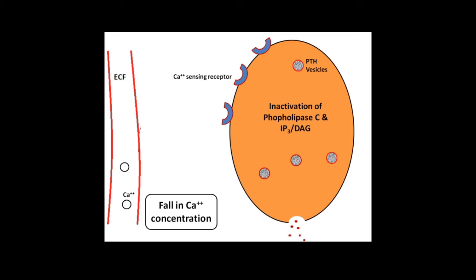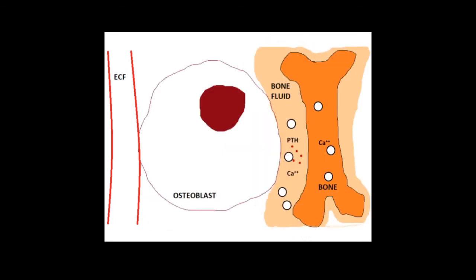This parathyroid hormone then reaches the bone. In the bone, this parathyroid hormone acts on osteoblasts.